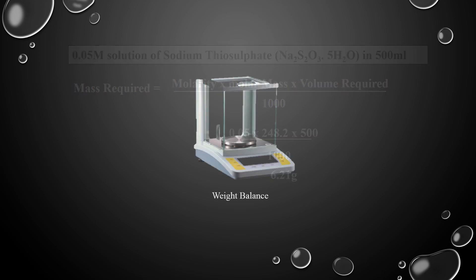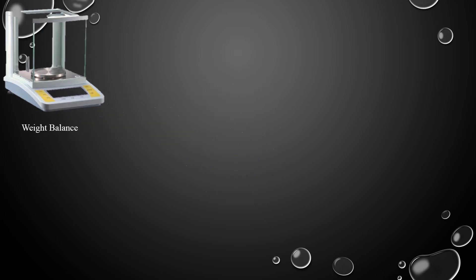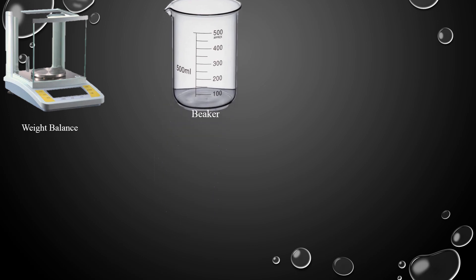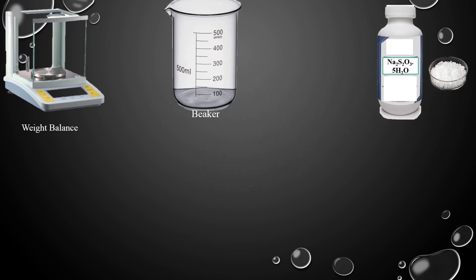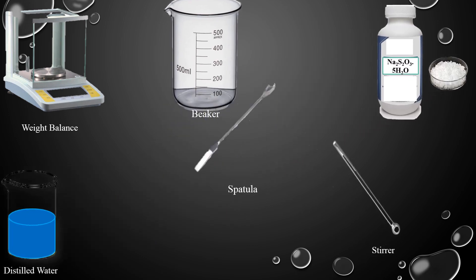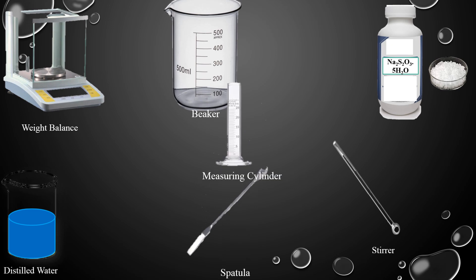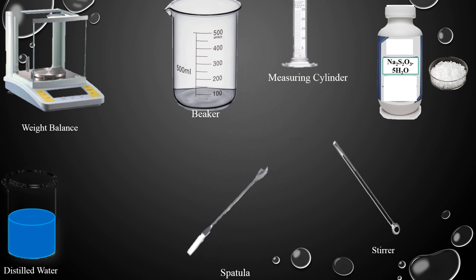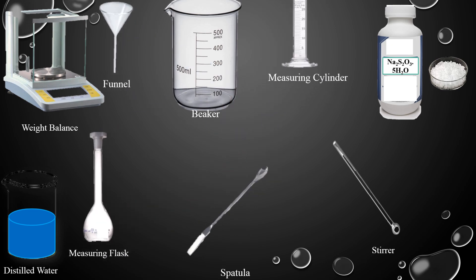To prepare 0.05 molar solution of sodium thiosulfate, the apparatus required are: weight balance, beaker, sodium thiosulfate, distilled water, stirrer, spatula, measuring cylinder, measuring flask, and funnel.